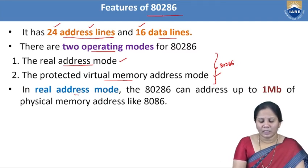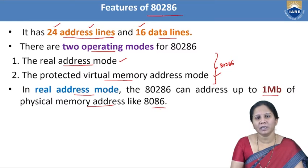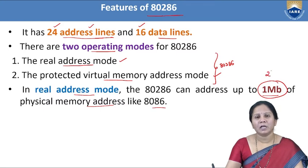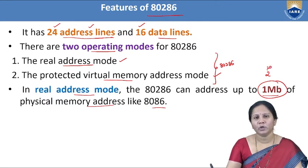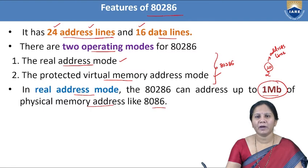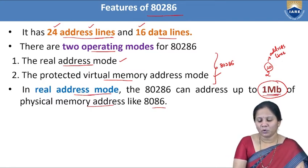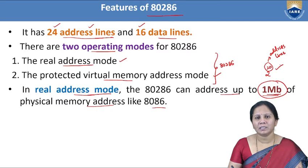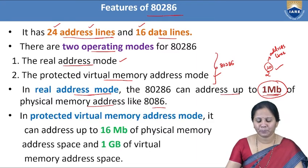In real address mode, the 80286 can access up to 1 MB of physical memory. This is because 1 MB equals 2 to the power of 20, where 20 represents the number of address lines used — only 20 of the 24 address lines are used, making it the same as the 8086.